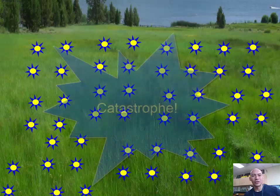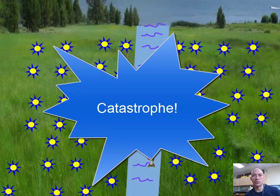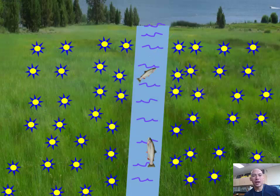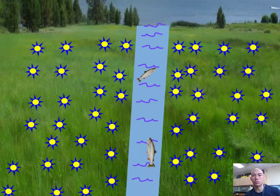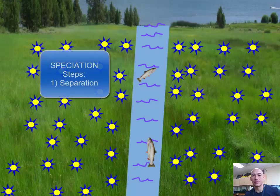However, let's say a catastrophe happens — like a nearby dam breaks and a river now cuts across the meadow. We have two populations of flowers now, one on either side of the river, and the river is too wide for any breeding to occur across it. These are two populations separated by a reproductive barrier. Separation is the first phase of speciation.